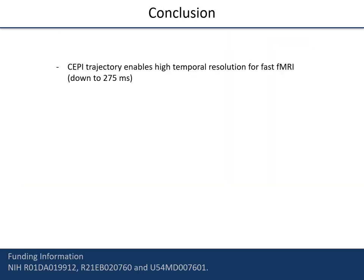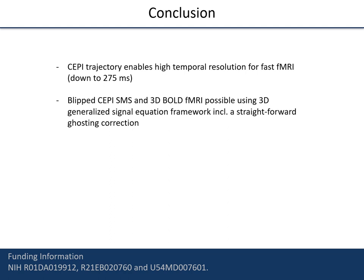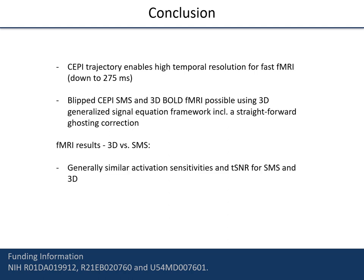This brings me to our conclusions. The CEPI trajectory enables high temporal resolution for fast fMRI, with sampling periods down to 275 milliseconds. Also, blipped CEPI SMS and 3D BOLD fMRI is possible using a 3D generalized signal equation framework, including a straightforward ghosting correction. Regarding the fMRI results, generally similar activation sensitivities and T-SNR for the SMS and 3D cases are observed. However, an exception is the fully sampled 3D acquisition, which makes us believe that acceleration is crucial for the 3D acquisition due to temporal smoothing.